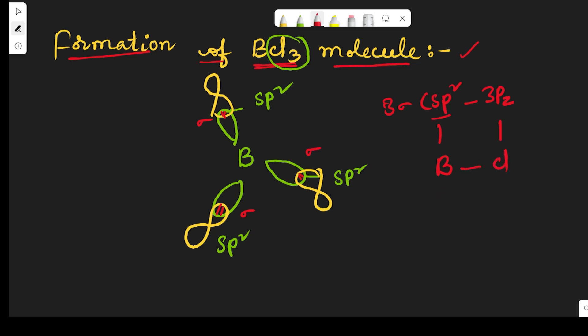In BCl3 there exist three sigma bonds. Like this, boron trichloride will form by sp² hybridization. We have to remember one more point: the bond angle is 120 degrees and the structure is trigonal planar.